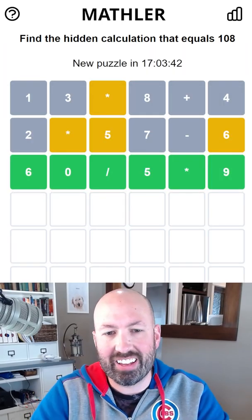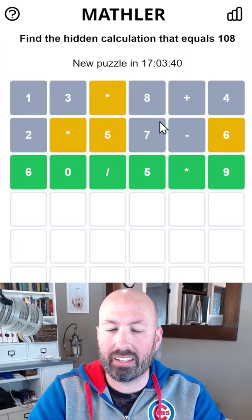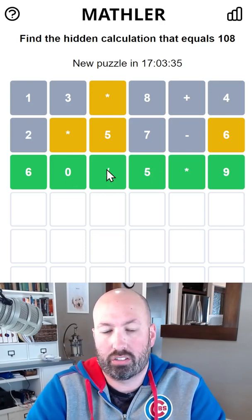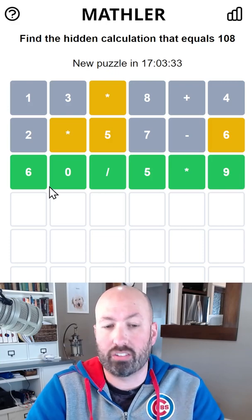There we go. All right, so we were getting lots of grays, but as I've said before, the grays can really help a lot because we've eliminated so many possibilities. The only thing left is the actual answer.